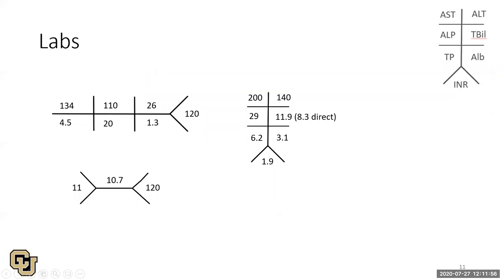Here are her labs: on a CMP, her creatinine is 1.3 — slightly elevated from baseline. She has AST and ALT elevations. Bilirubin is 11.9, mostly direct. INR is 1.9, albumin is a little low, and she has anemia.